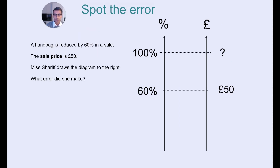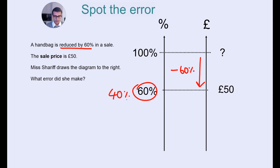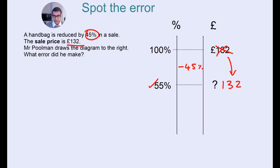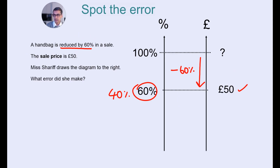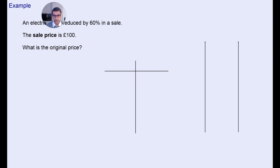Here's another spot the mistake. What's wrong with this diagram? Pause the video if you need more time. The reduction is 60%, so that means we're going down by 60%. Now 100% take away 60% is not 60% — it's going to be 40%. These two errors, along with the previous one, are the most common mistakes we see with reverse percentages. Remember: a reduction of 60% means you're paying 40%. Make sure you label your diagram carefully.